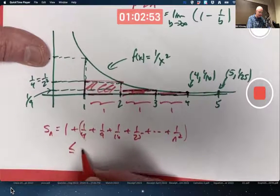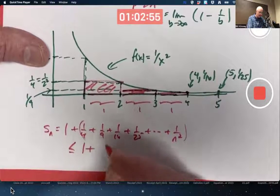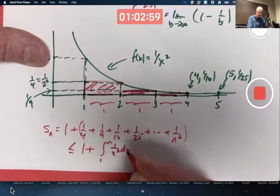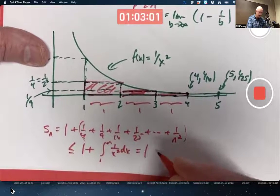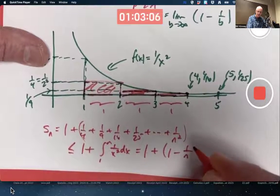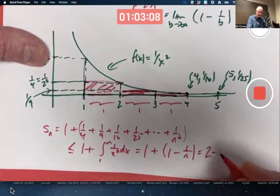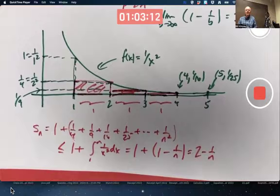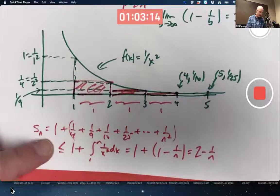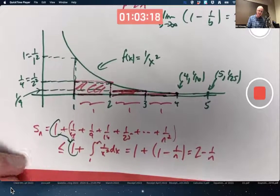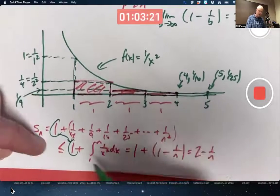This is less than or equal to 1 plus the integral from 1 to n of 1 over x squared, and that integral we just found was 1 minus 1 over b, but now I'll write it as 1 minus 1 over n. Sn is less than or equal to 2 minus 1 over n. This one that is in front, by the way, is just going right there. What's in parentheses is bounded by the integral.